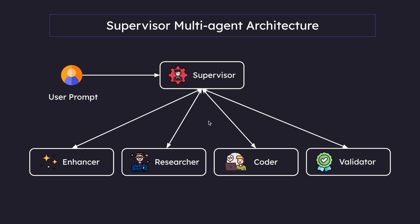This is what I want to build. We have a supervisor agent at the very top, and this supervisor agent has four different agents underneath: the enhancer agent, the researcher agent, the coder agent, and the validator agent. If the supervisor agent thinks that the user prompt is a little vague, it can use the enhancer agent to make the prompt better, to rephrase it.